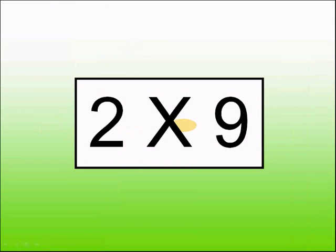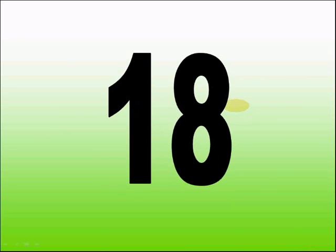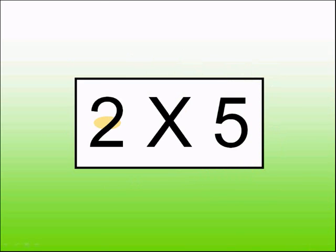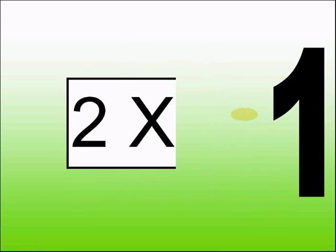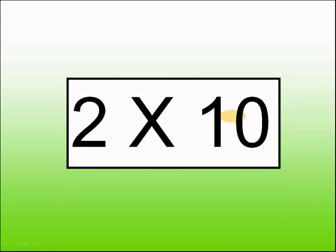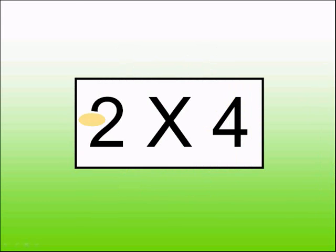What is two times five? Ten. What is two times ten? Twenty. What is two times four? It's eight.